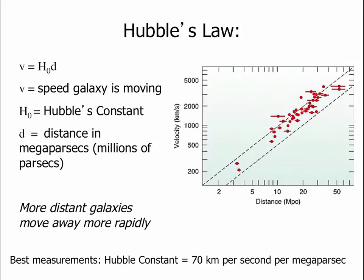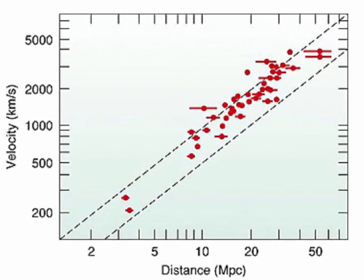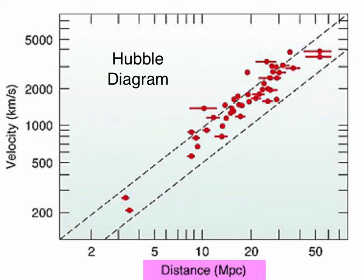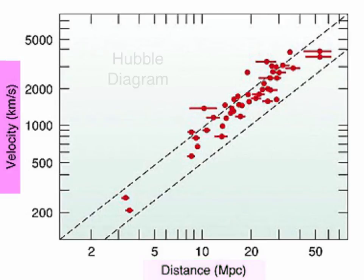Hubble made a plot of all these galaxies — their distances from Cepheids and their recession speeds — and found they formed nearly a straight line. This is called a Hubble diagram: on the x-axis is distance in megaparsecs (one megaparsec equals one million parsecs, or three million light years), and on the y-axis is the Doppler velocity in kilometers per second. All galaxies are moving away from us, and the more distant you go, the faster the velocity, forming a nice straight line.